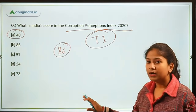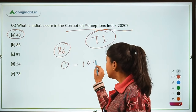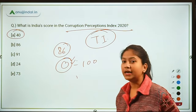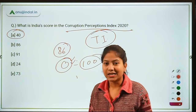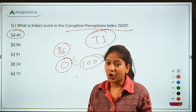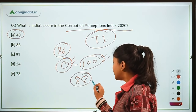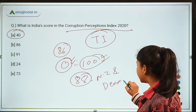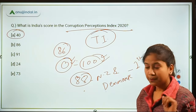The Corruption Perception Index scores countries on a scale of 0 to 100, where 0 represents the most corrupt country and 100 represents the cleanest. No country has achieved a score of 100. The country ranked first has a score of 88 — and those countries are New Zealand and Denmark, which share the same score and the same first-place ranking.